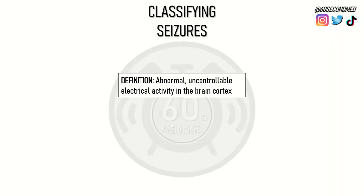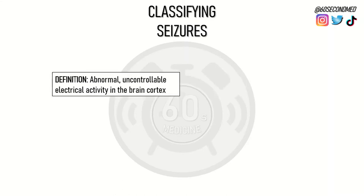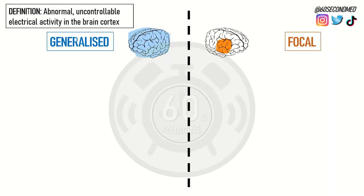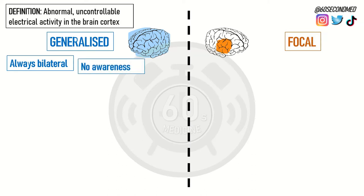We define seizures as an abnormal uncontrollable electrical activity in the brain cortex. We can broadly categorize seizures as generalized or focal and then subcategorize as we go along. A generalized seizure is always bilateral, affecting both sides of the body. There is no awareness in a generalized seizure, so the patient will not know what's going on during the seizure.